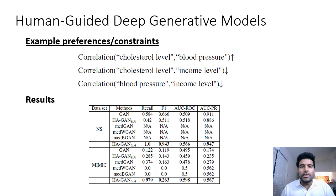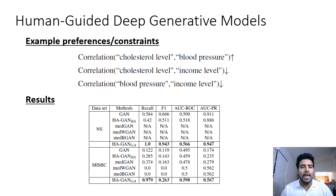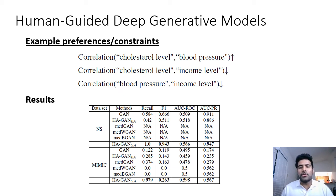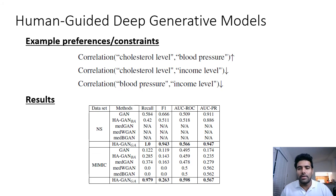We show some example correlation advice used while training the GAN. For example, a preference might be that the correlation between cholesterol level and blood pressure is high, and another preference might be that the correlation between cholesterol level and income level is low.